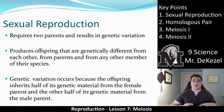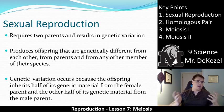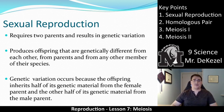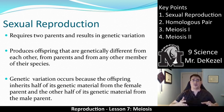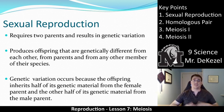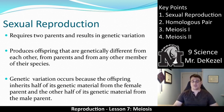Sexual reproduction produces offspring that are genetically different from each other and from parents and from any other member of their species. Dogs would be another example of sexual reproduction where no dog is exactly the same. Genetic variation occurs because the offspring inherits half its genetic material from the female parent and the other half from the male parent — so you get a mix. In asexual reproduction there was no mixing, no two parents; it was just one, always exactly the same — a clone. In sexual reproduction there is no cloning, there is mixing, and therefore there is genetic variation.